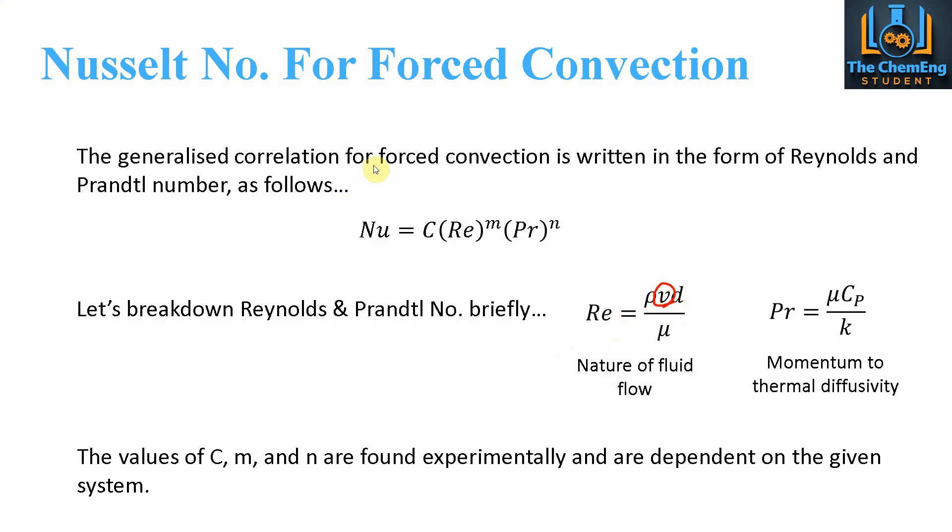Now the values of c, m and n are found experimentally and are dependent on your given system. But we'll look at actual numerical examples in just a second.